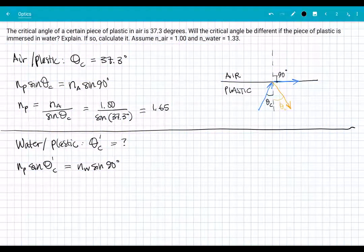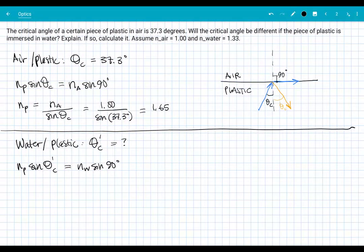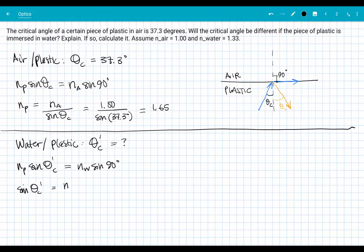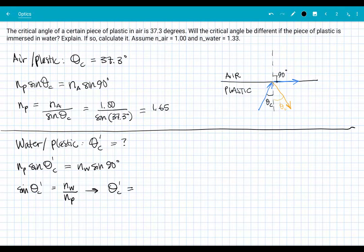So the sine value for my new critical angle is then going to be equal to the ratio of n_water and n_plastic if I solve for that there. So the angle, that's what's being asked for here, is just going to be the arc sine of that ratio.